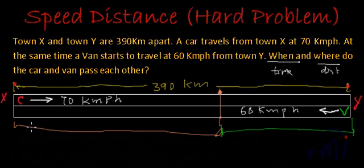So let's assume that they are meeting t hours after the start. Right? So the distance traveled by this car in t hours will be 70 multiplied by t. Right? And the distance traveled by van in t hours will be 60 multiplied by t. And together these two distances are equal to 390 kilometers.